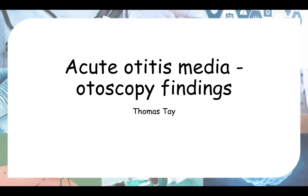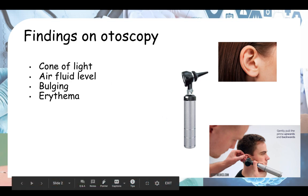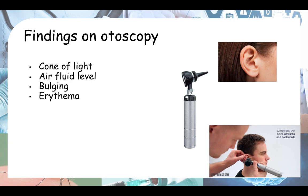Hello everyone, today we'll be talking about acute otitis media otoscopy findings. There are four things that you will expect to find in otitis media: the cone of light — you want to see whether it's in the correct anatomical position or not — the air fluid level, the bulging of the tympanic membrane, and also erythema. You won't see all of these signs at the same time.